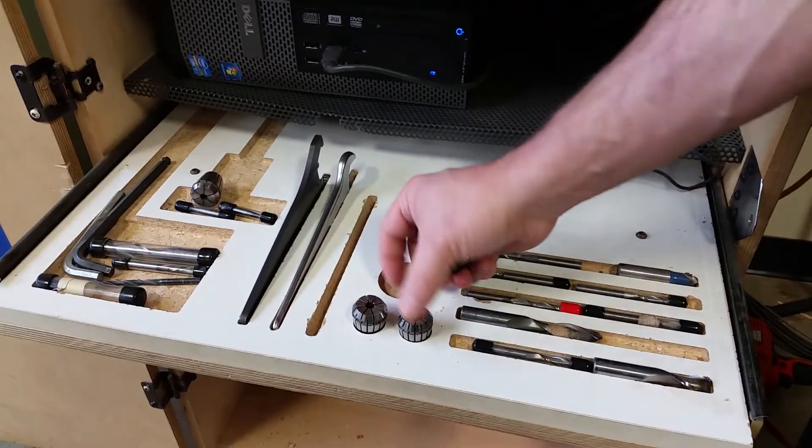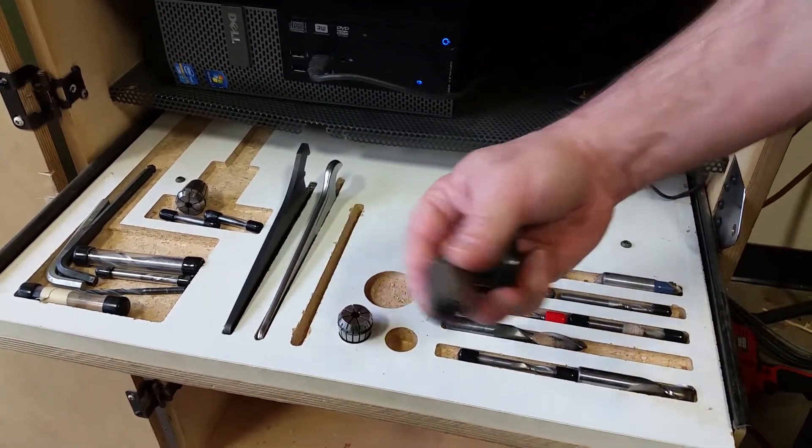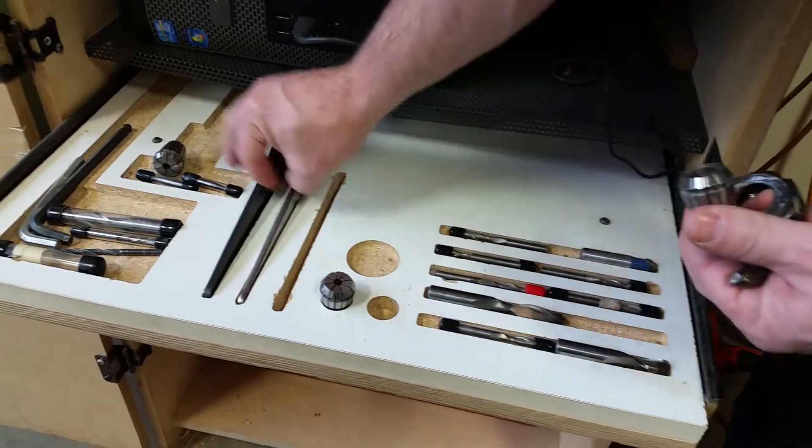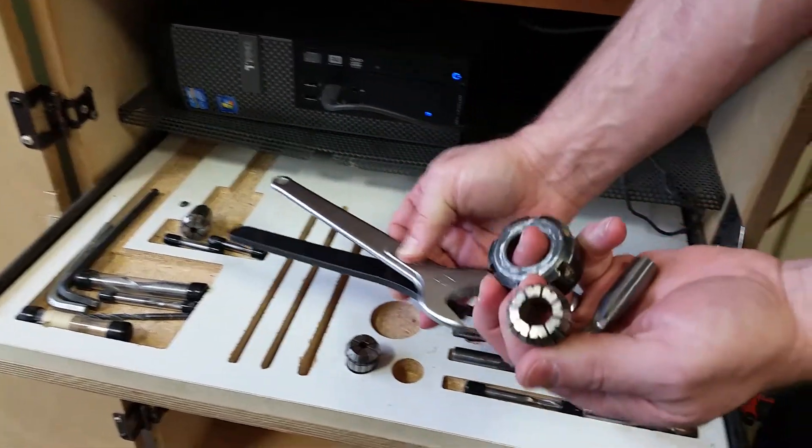In our drawer here we need a collet nut, we need an ER25 collet, we need our two tools, and we need our cutter.